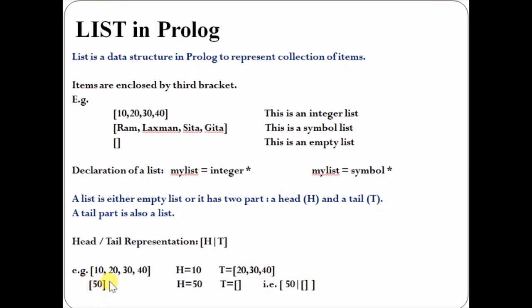In this case, there is only one item. The head will be 50, and the tail will be the empty list. It is like 50 | [].